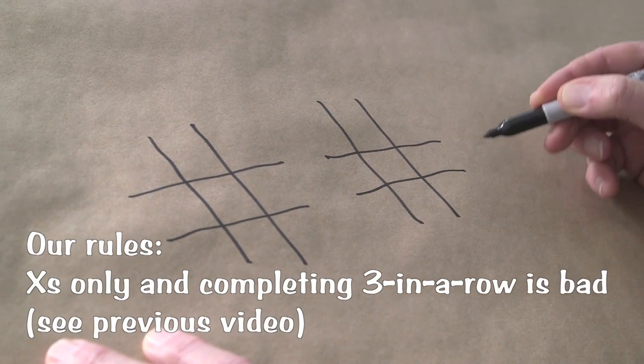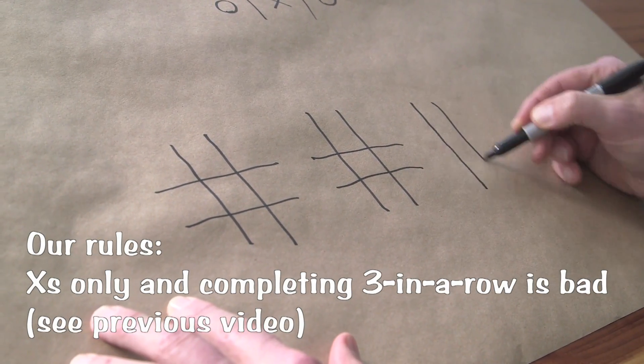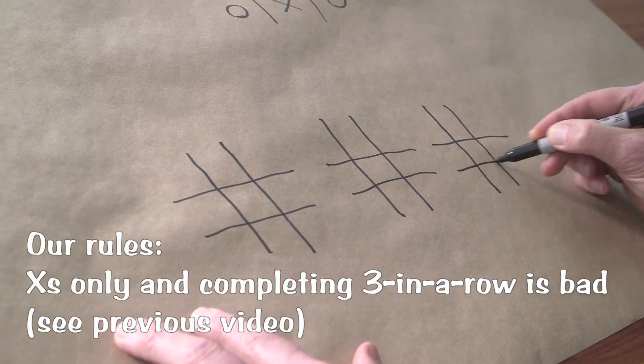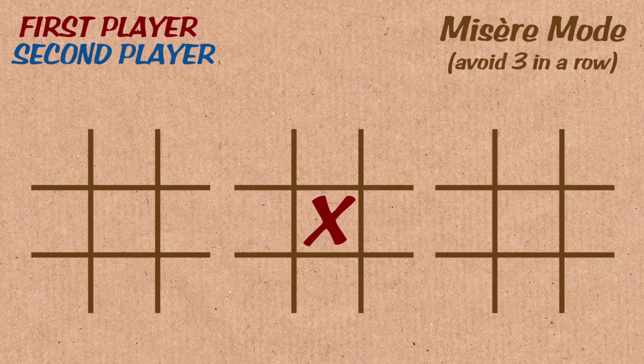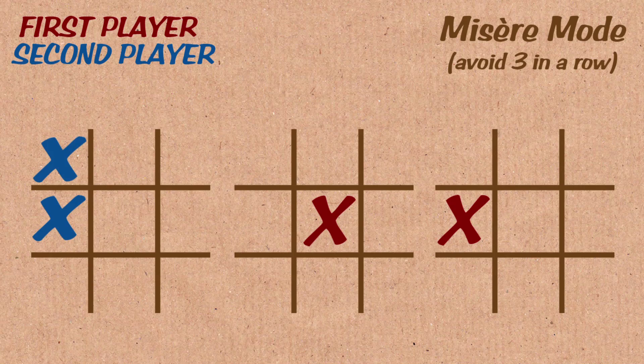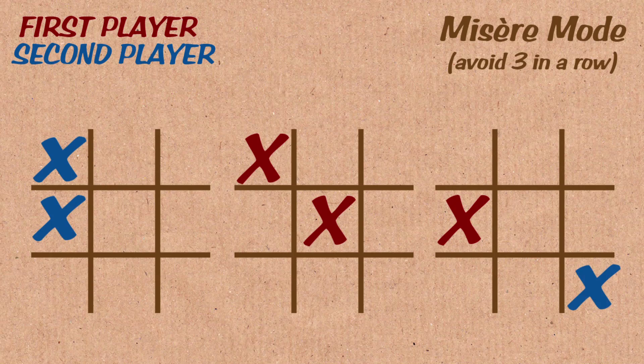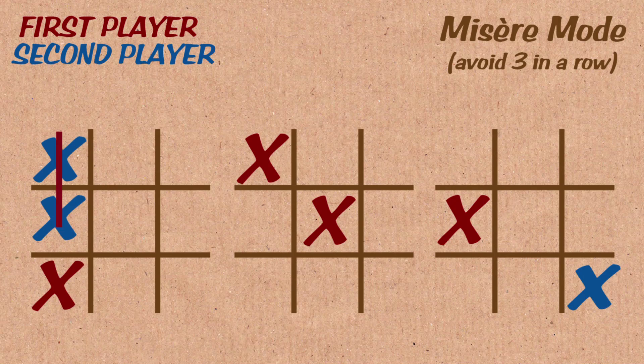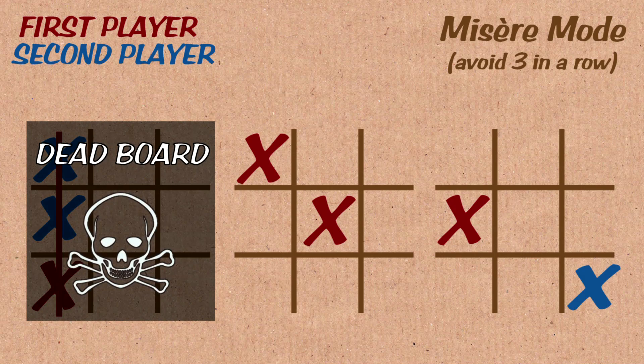The rules here are that a player on their move can put an X on any of the boards. You can choose whichever board you like. As players put X's on the boards, eventually one of the boards is going to get three in a row, and then that board, but only that board, is declared dead at that point. You can't make any more moves on that particular board, but you play on on the remaining two.